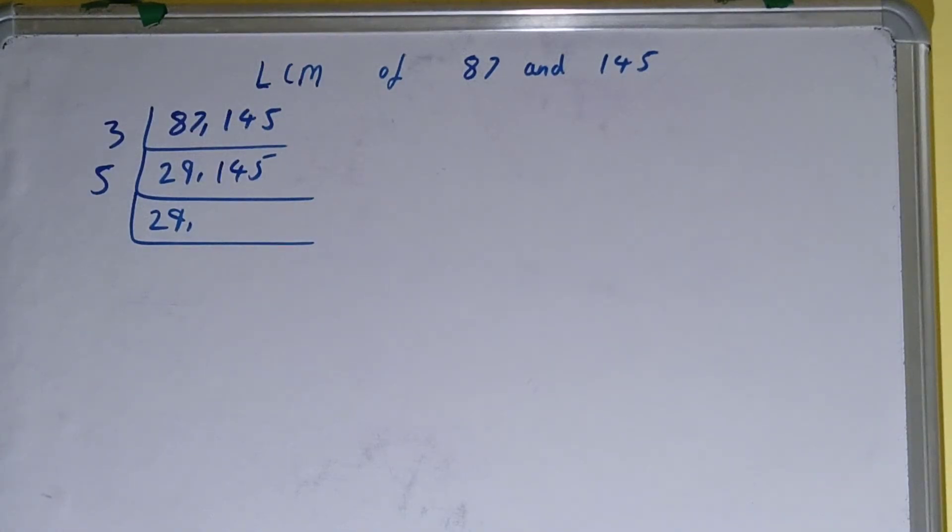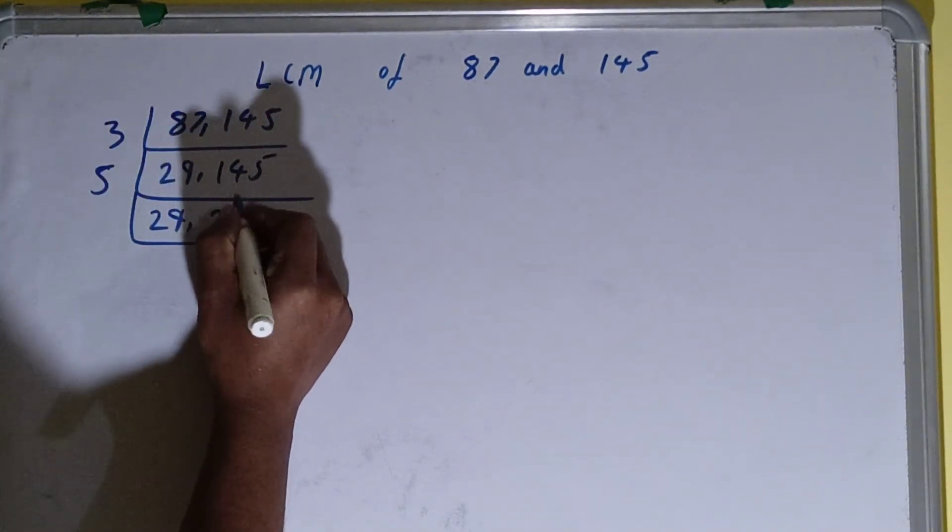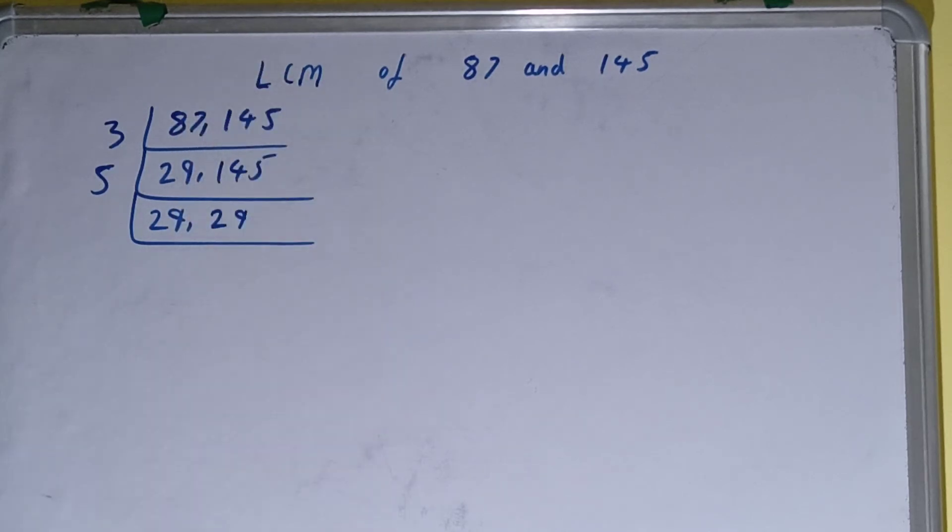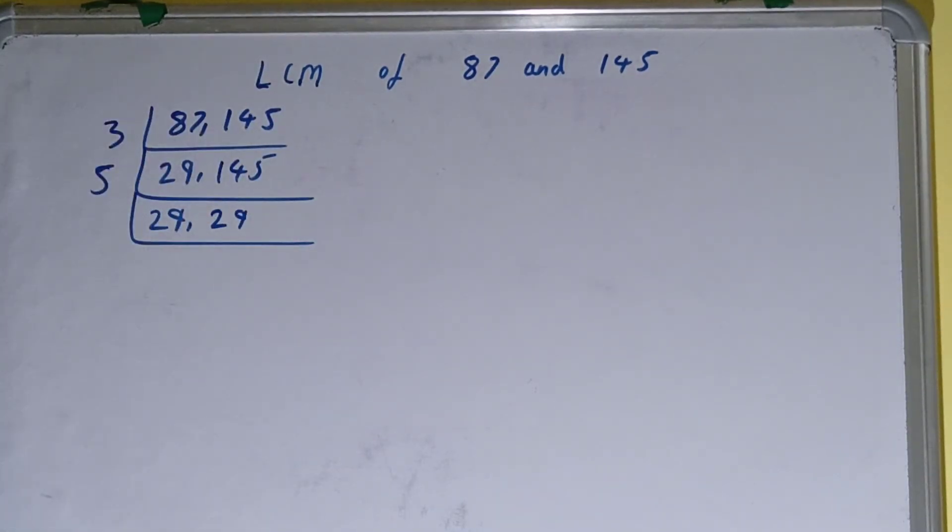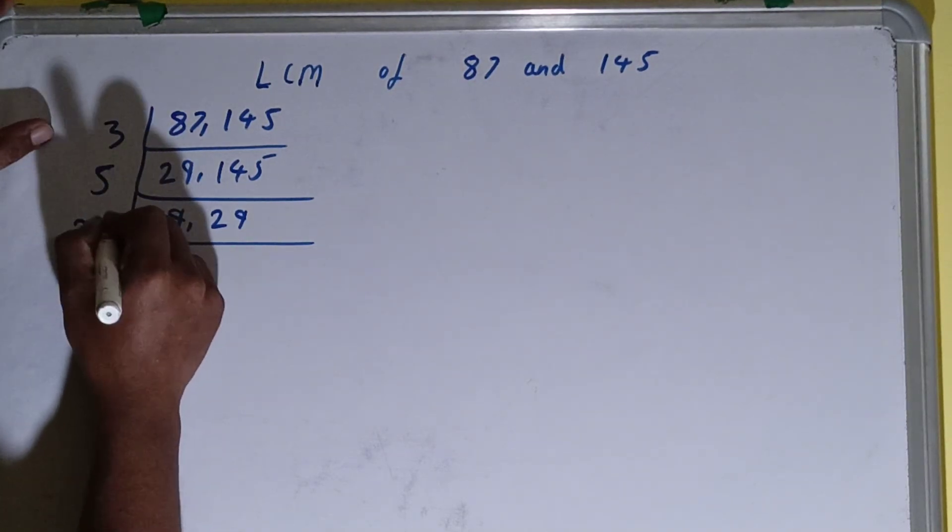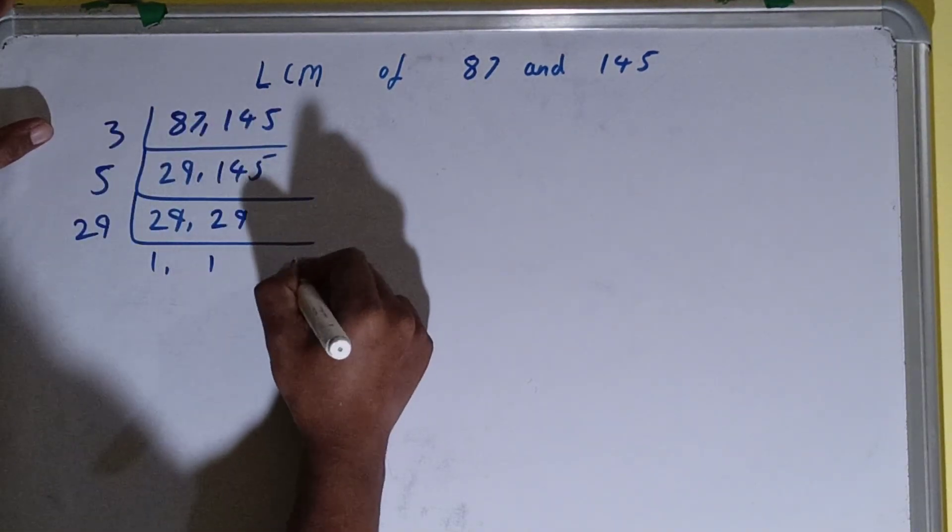The second number on dividing by 5 will become 29. Now if we check, then none of the numbers is divisible by 5, and on that, if we see the number 29, it is a prime number. That means it can be divided by itself only, and when we'll do so, we'll get 1 comma 1.